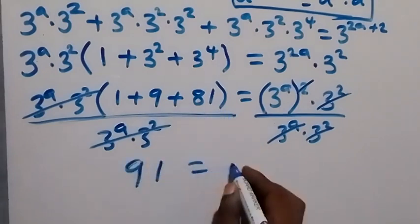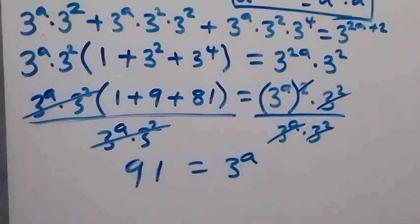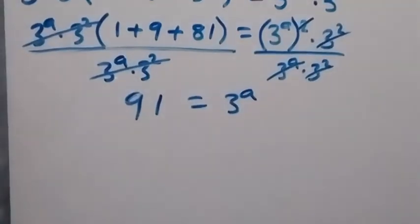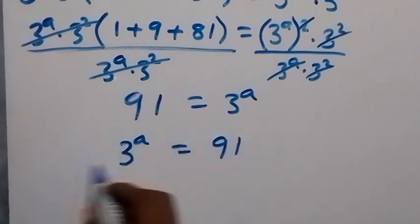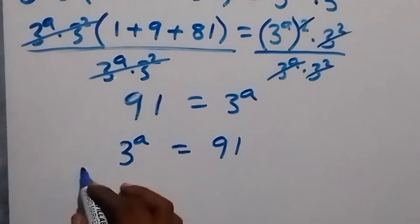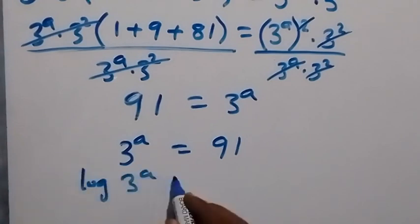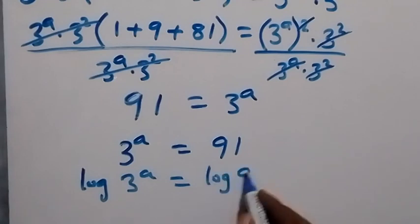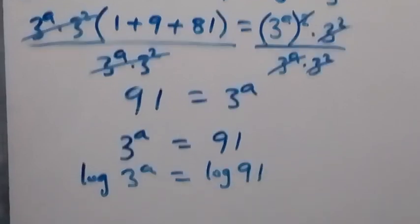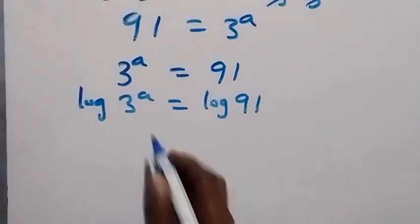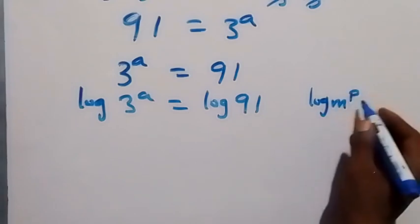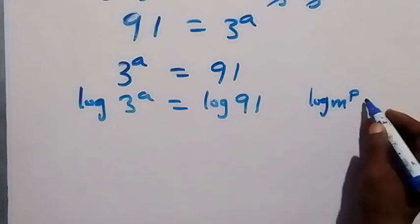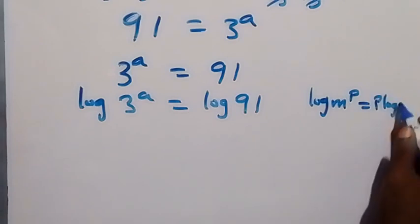So 91 equals 3 raised to power a, which is the same as writing 3 raised to power a equals 91. Then let's take the log on both sides: log 3 raised to power a equals log 91. From here, applying the power rule of logarithms — when we have log m raised to power p, this p can come to the front — this will become p times log m.